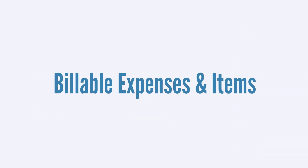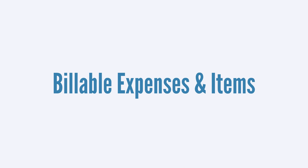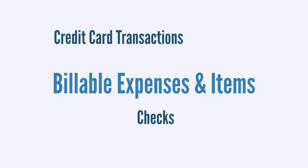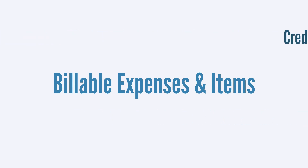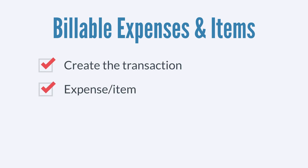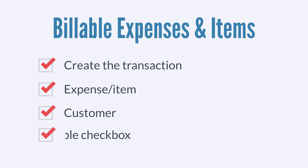To create billable expenses or billable items, you would use purchase orders, checks, or credit card transactions. For any of these options, you would simply need to create the transaction, identify the expense or item on the transaction, identify the customer that the item or expense applies to, and select the Billable checkbox.